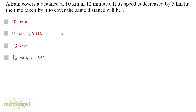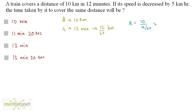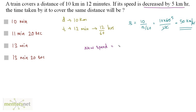A train covers a distance of 10 km in 12 minutes. If its speed is decreased by 5 km per hour, the time taken by it to cover the same distance will be. You have been given the distance as 10 km and the time as 12 minutes, which is equivalent to 12 by 60 hours. Speed is equal to distance upon time, which is 10 divided by 12 by 60, and that's 10 times 60 by 12. So 12 times 5 is 60, 10 times 5 is 50 — so 50 km per hour is the speed of this train. This speed is decreased by 5 km, so the new speed is equal to 50 km minus 5 km, that's 45 km per hour.